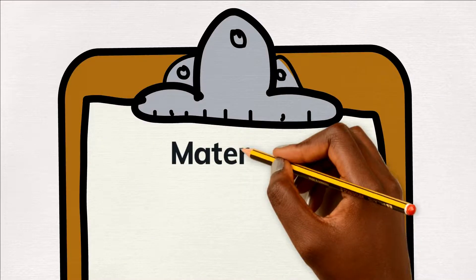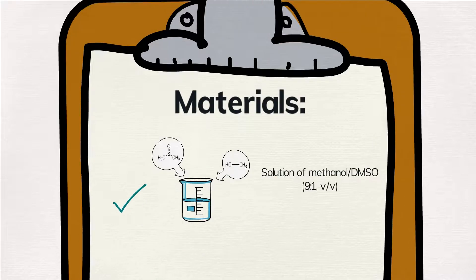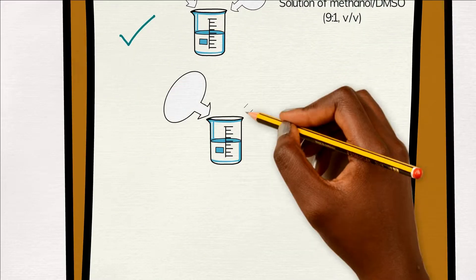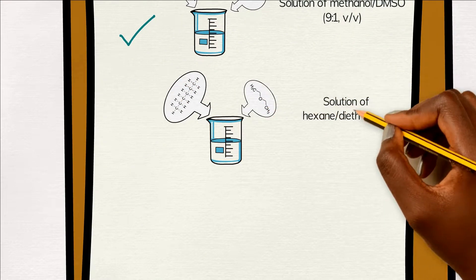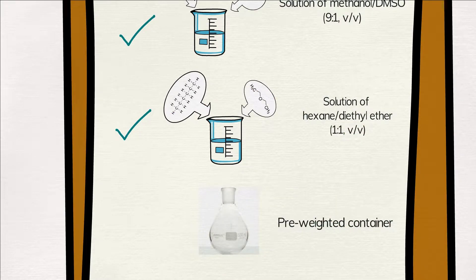For this method we will need a solution of methanol and DMSO at 9 to 1 ratio, a solution of hexane and diethyl ether at 1 to 1 ratio, and a pre-weighed container that can be glass tubes or flasks.